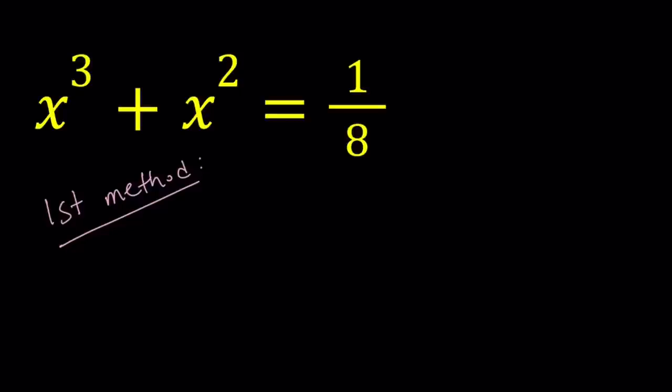In our original equation, let's replace x with y minus 1 third. Now you might be asking, where does that minus 1 third come from? You look at the coefficient of x squared, which is 1 in this case, and then you just negate it and divide it by the degree of the polynomial, which is 3.